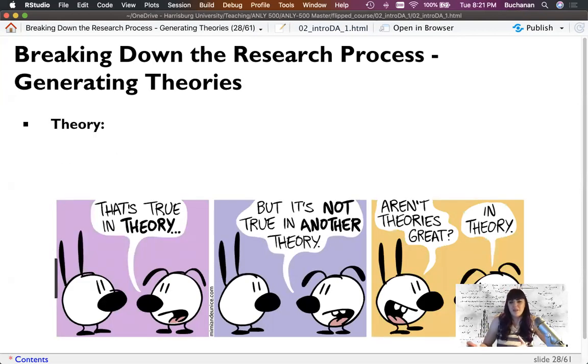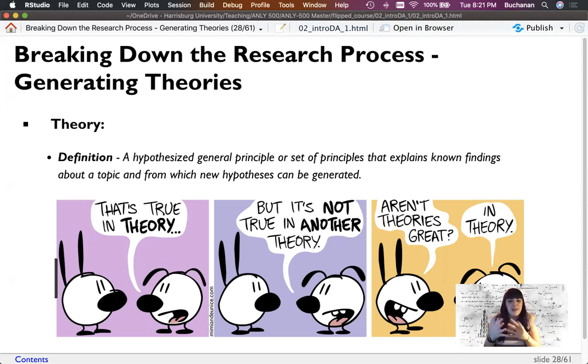So first thing we might have is some sort of theory. In clinical psychology, they've got a lot of theories, but what is a theory? So it's a set of rules or set of principles that explains the things that we've already seen, and then allows us to generate new hypotheses. So we have some theories about how people are resilient, and people who focus on the positives should have better life outcomes. And this is a way oversimplification of my friend's research, but it's a basic idea. And so from that theory, I can generate a hypothesis.